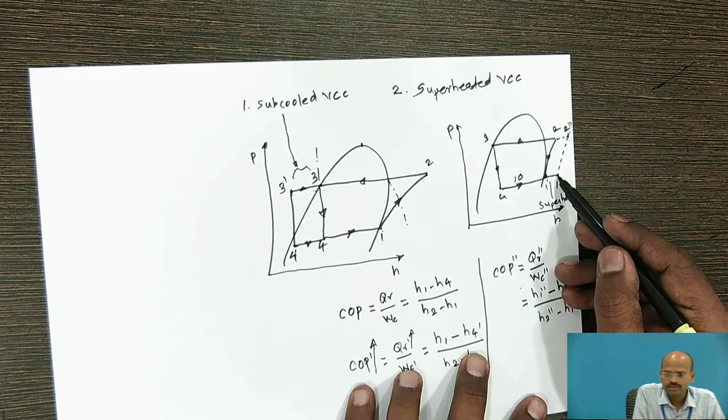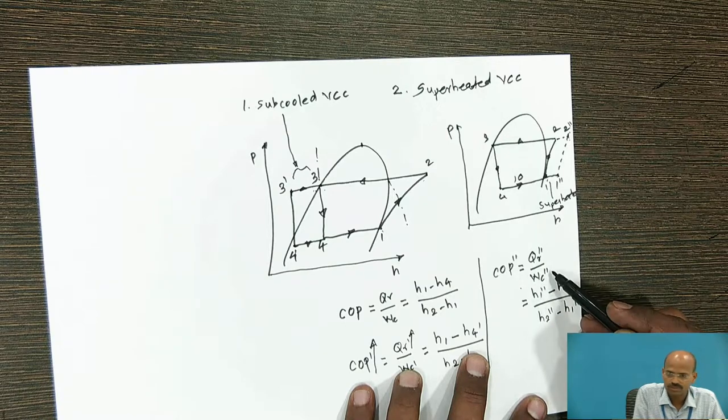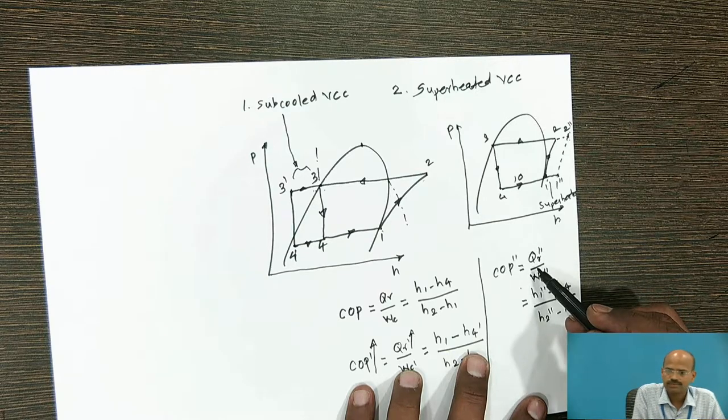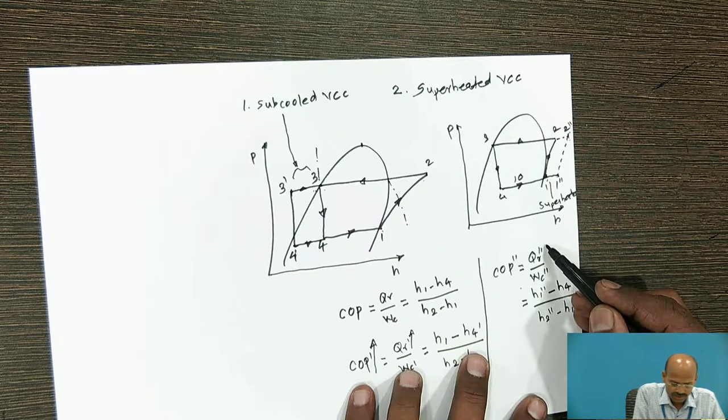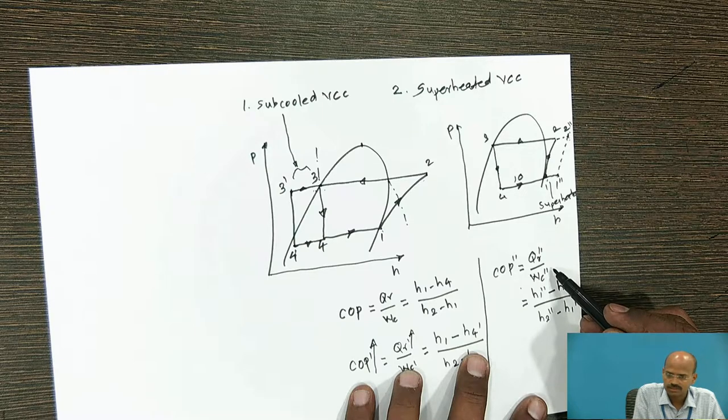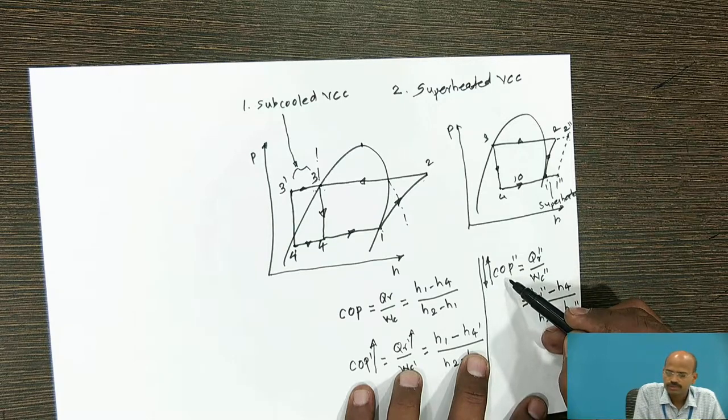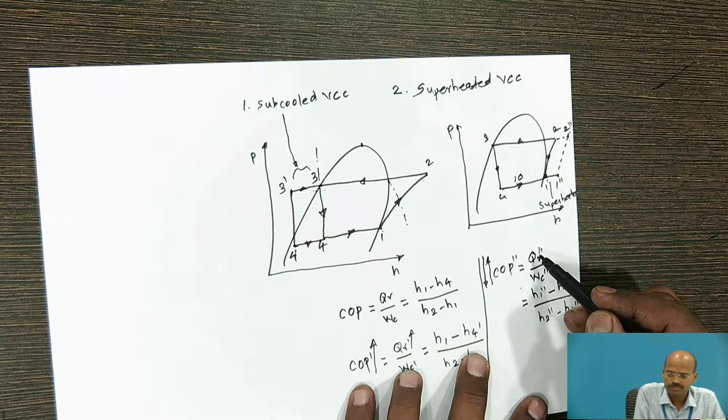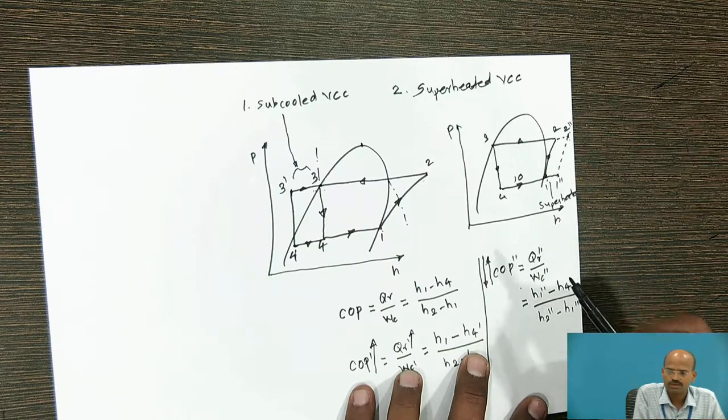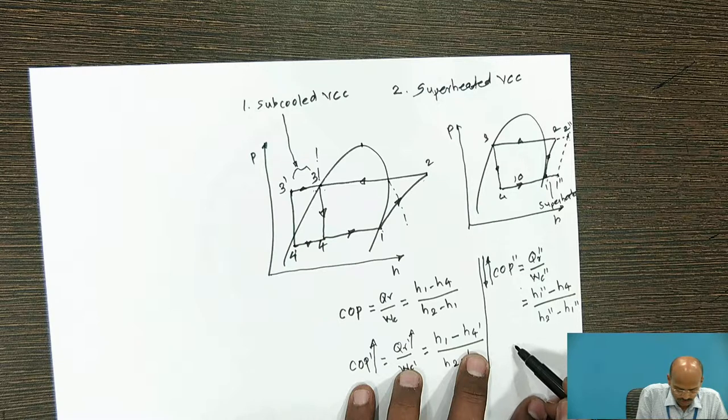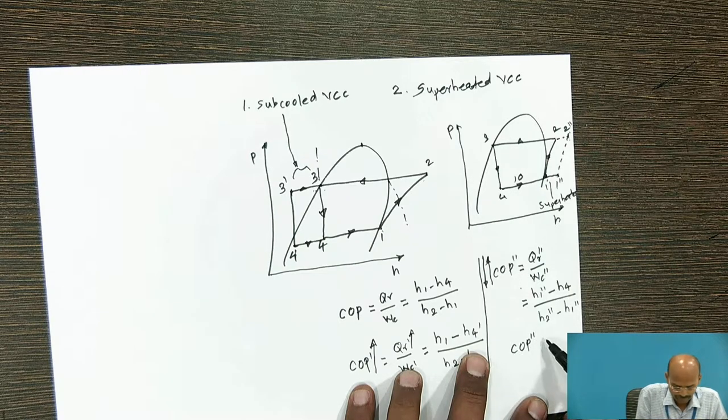Now here as the specific volume increases there will be change in the compression work also. There is increase in the refrigerating effect. For the selected refrigerant, we have to find out the change, that is increase in the refrigerating effect and increase in the work consumption. So the increase or decrease in the COP for superheating depends upon the type of the refrigerant filled or charged or used in that particular appliances. Means the superheated VCC COP may be greater than, less than, or equal to theoretical COP.